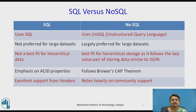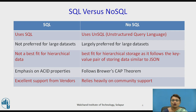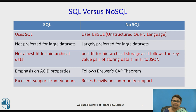SQL emphasizes all the ACID properties, whereas NoSQL supports Brewer's CAP theorem, where only any two of the three — consistency, availability, and partition tolerance — are available. We cannot support all three in a single system; any two of them work according to Brewer's theorem.